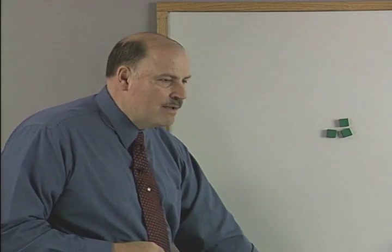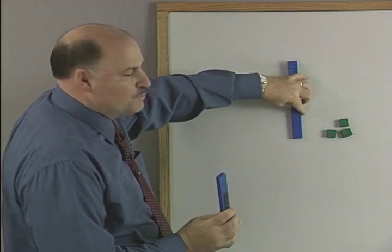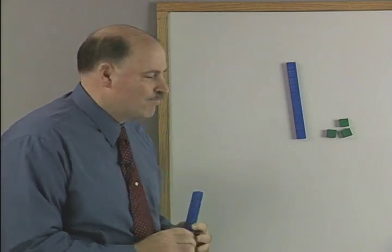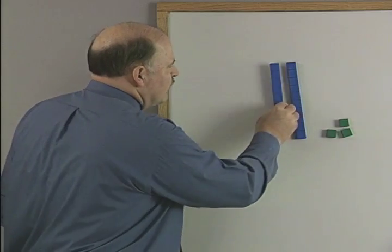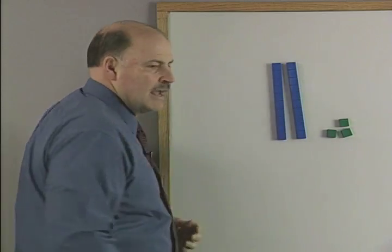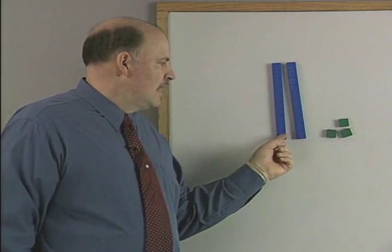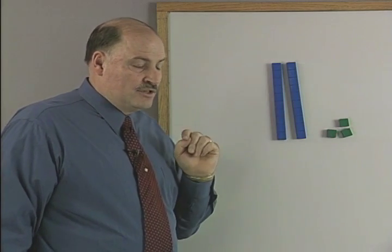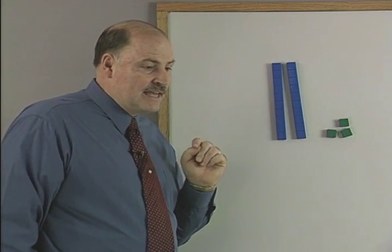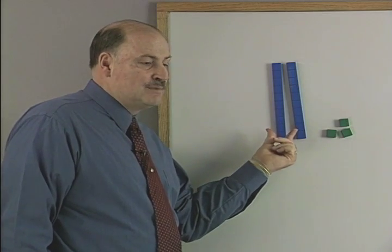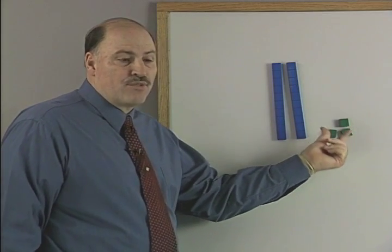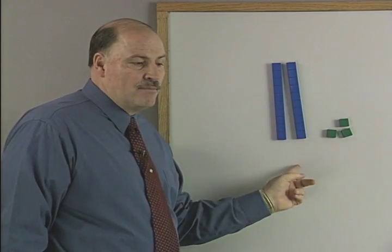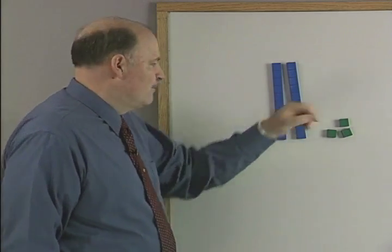That would be the same as one of these big blue ones, which we haven't used yet. These are the tens. So how many tens do I have right now? Two. And how many units do I have? Three. So in this case, two tens is more than three units, right? Because the two only tells you how many, but the ten tells you what value.